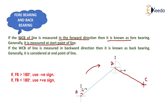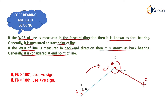Now if the whole circle bearing of a line is measured in the backward direction, then it is known as backbearing. Generally it is considered at the end point of the line. Suppose that for line a-b, backbearing is measured at station b, that is the end point of line a-b. So theta2 is the backbearing of line a-b, which is shown here.